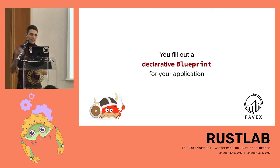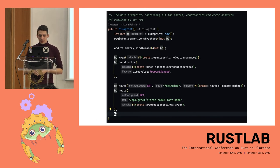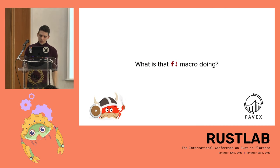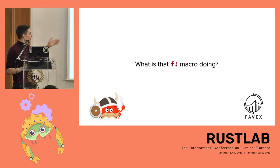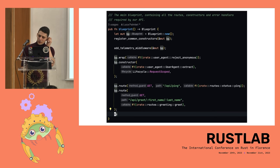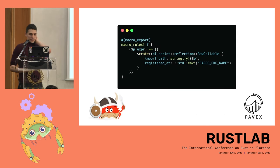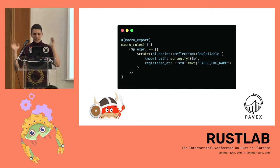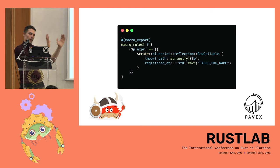As you saw in the demo, you start out by filling a declarative blueprint — basically telling the framework what the application needs to do: what the routes are, what the middlewares are, how to build the types you use. The thing that might jump out as odd is what that `f!` macro is actually doing. It's actually a pretty simple macro — this is the full definition. It takes the expression you pass as input, stringifies it, assigns that to the `import_path` field, and captures the package that invoked the macro for diagnostics.